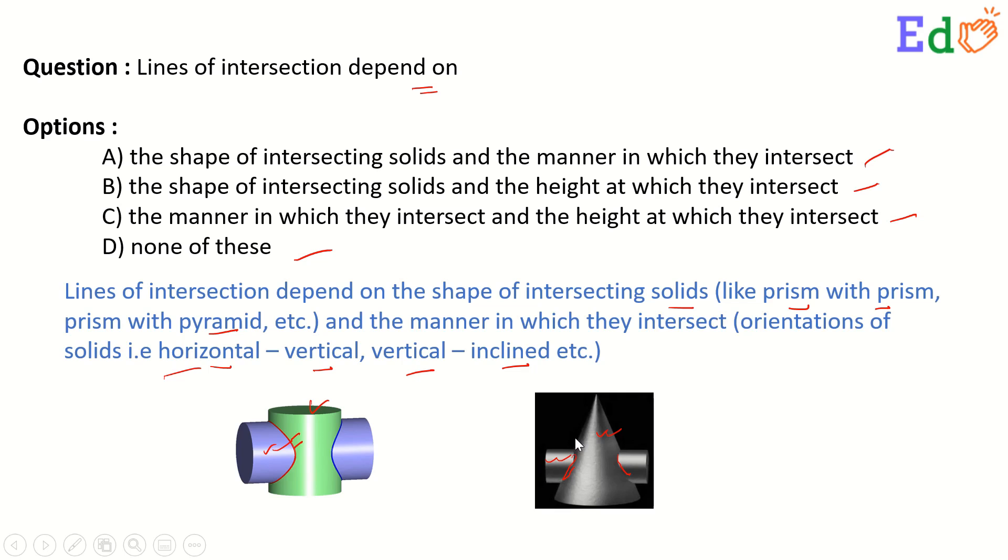So here, option A: The shape of intersecting solids and the manner in which they intersect. This is the correct option.